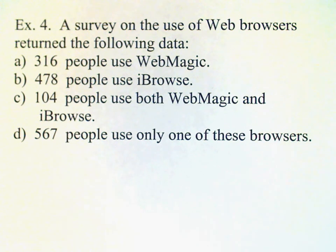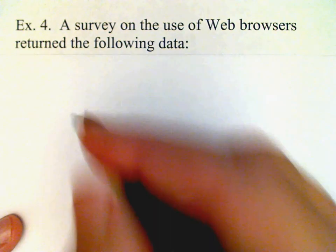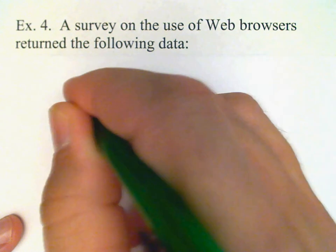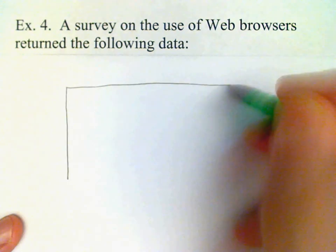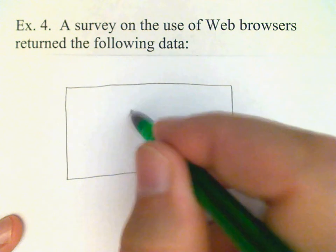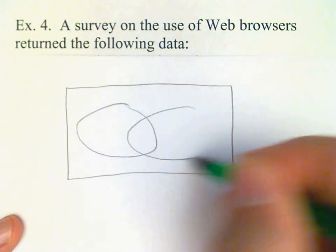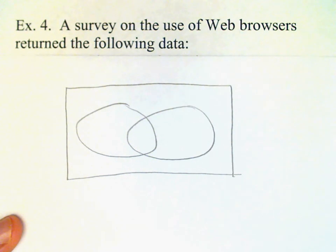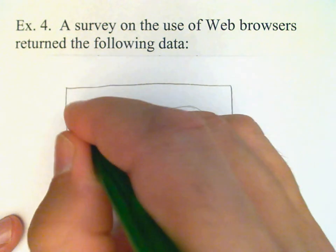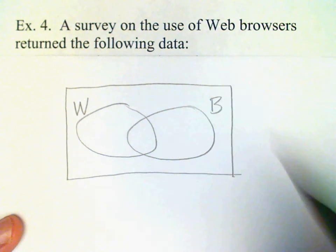Let's see if that stands up to analysis using a Venn diagram. I'm going to draw a two-set Venn diagram, and I'll call one set W for WebMagic and the other one B for Eyebrows.